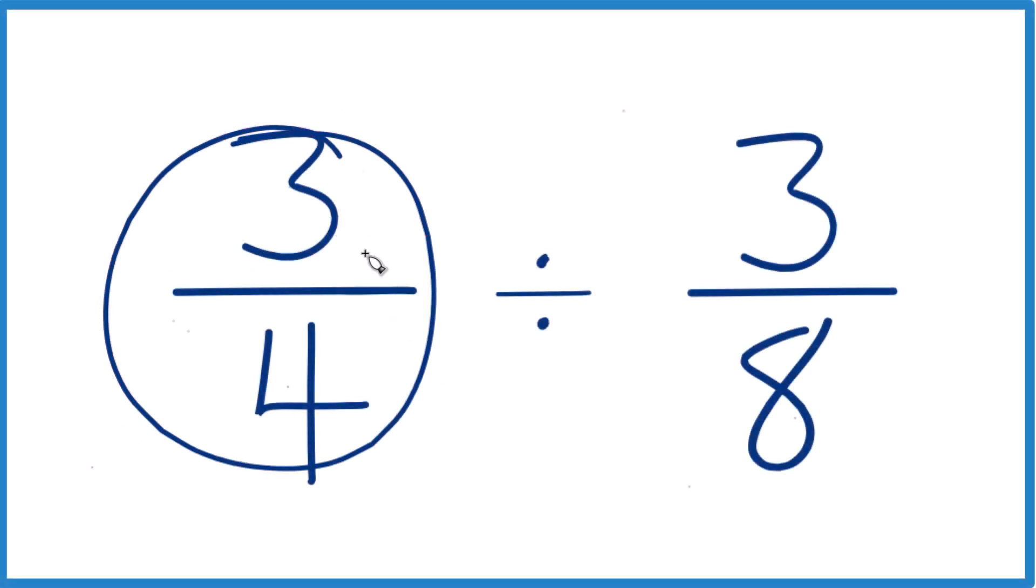So let's do this. We've got 3 fourths, we want to take 3 fourths divided by 3 eighths.